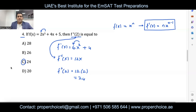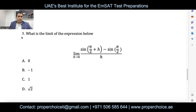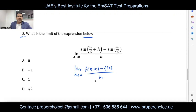Even if they ask for the third or fourth derivative, the approach is the same — apply the power rule step by step. Question number five: what is the limit of the expression shown? Looking at it, it is in the form of the definition of a derivative: lim(h→0) [f(x+h) − f(x)] / h, which equals the first derivative of the function. In this case, f(x) = sin(x).